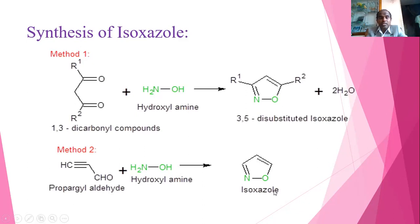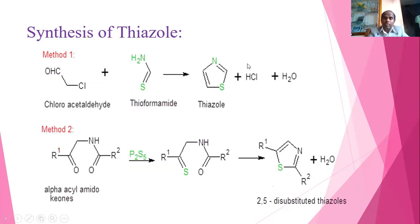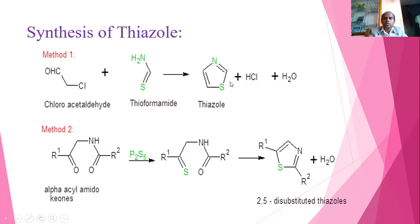Thiazole is a 5-membered ring containing sulfur and nitrogen at the 1 and 3 positions. It can be prepared starting with chloroacetaldehyde (alpha-chloroaldehyde), which reacts with thioformamide in a condensation reaction with removal of water and HCl, where the bond pair attacks the carbon, Cl leaves, and a double bond forms, giving thiazole.